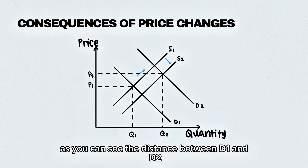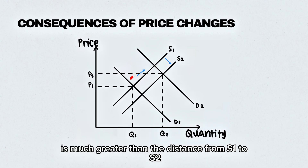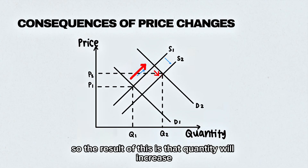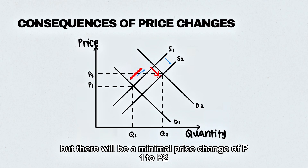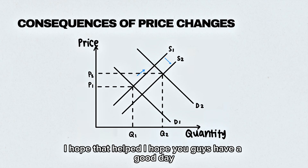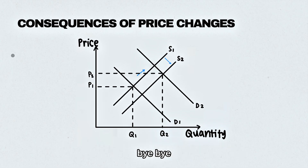This is a scenario where demand outpaces supply. As you can see, the distance between D1 and D2 is much greater than the distance from S1 to S2. The result is that quantity will increase from Q1 to Q2 but there will be only a minimal price change from P1 to P2. I hope that helped — have a good day, bye!